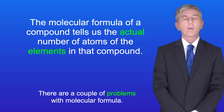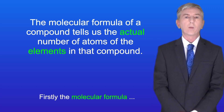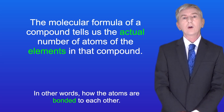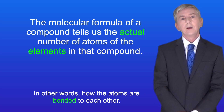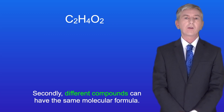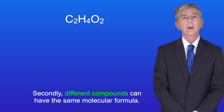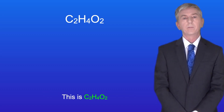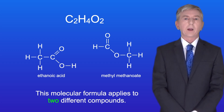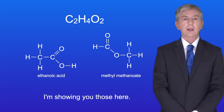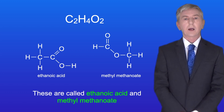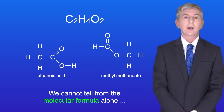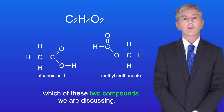There are a couple of problems with molecular formula. Firstly, the molecular formula does not give us any information on the structure of the molecule — in other words, how the atoms are bonded to each other. Secondly, different compounds can have the same molecular formula. For example, C2H4O2 applies to two different compounds: ethanoic acid and methyl methanoate. So we cannot tell from the molecular formula alone which of these two compounds we're discussing.